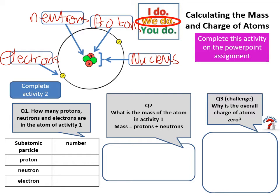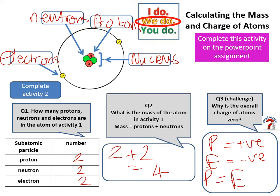This one here says how many protons and neutrons are in the atom in activity one. So if we look at this, this is the atom in activity one here. I've got two positive protons, two neutral neutrons, and two electrons. What is the mass of the atom? The mass is protons and neutrons. So there's two protons added to two neutrons, and that means the mass is four. You don't need a unit for that, it's just four. Why is the overall charge on the atom zero? You should remember that protons are positive, electrons are negative. That means the number of protons equals the number of electrons, so the overall charge is zero.